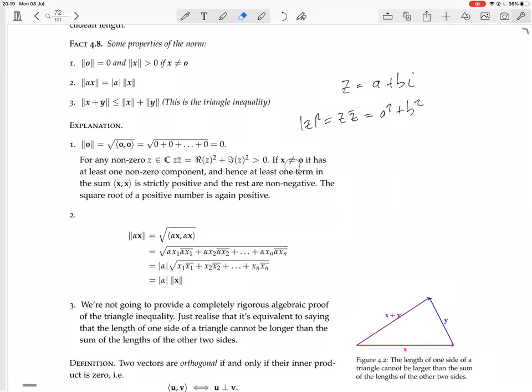Now, if x is not equal to zero, it has at least one non-zero component. And hence, this is something we've looked at before. It's saying that when you take the inner product of the vector with itself, it has one non-zero component.